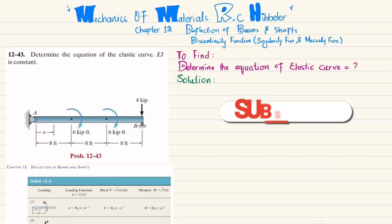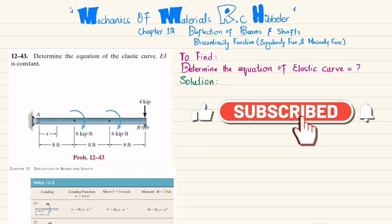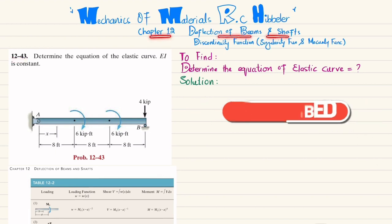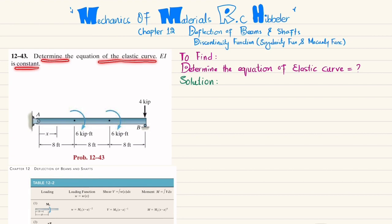Welcome back. Today we will solve problem 12-43, taken from chapter 12: Deflection of Beam and Shaft, from the book Mechanics of Materials by R.C. Hibbeler. The statement is: determine the equation of elastic curve; EI is constant.